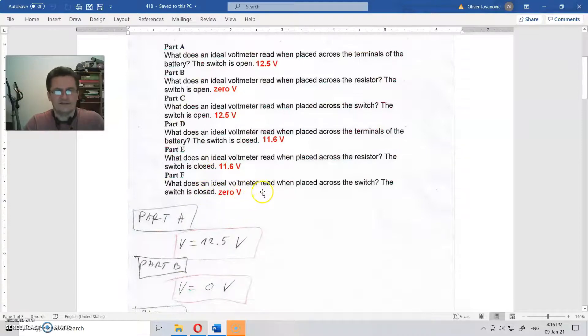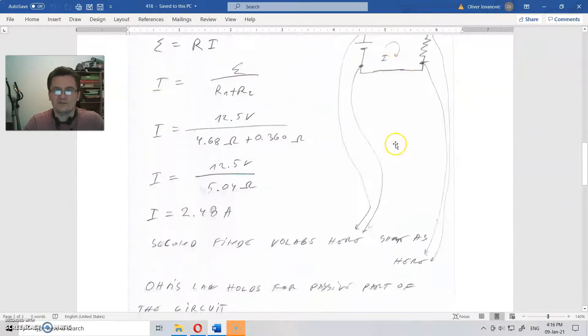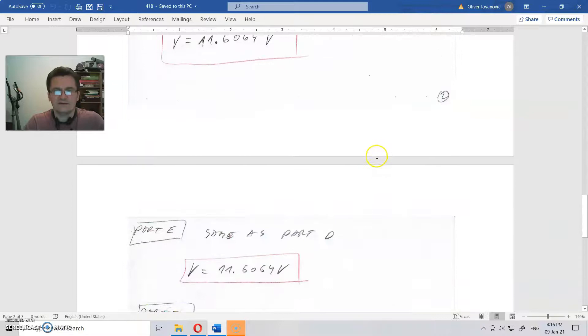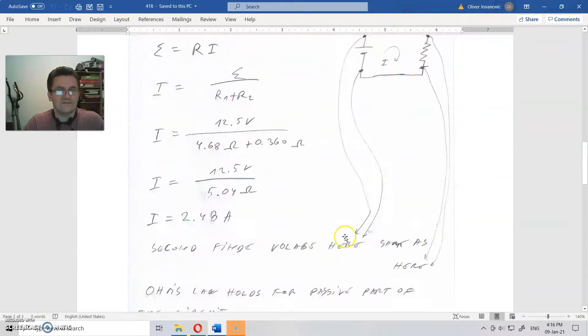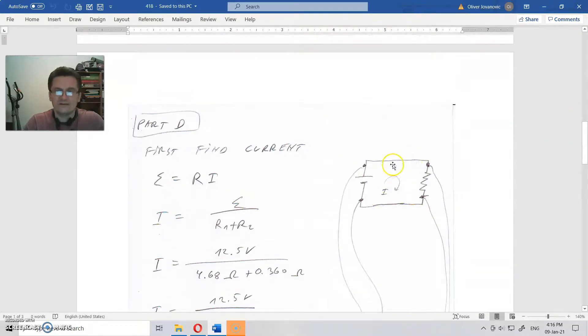Part F: What does an ideal voltmeter read when placed across the switch? The switch is closed. There is zero volts across the switch. Why is there zero volts? Well, a switch is a conductor. When you close a conductor and there is a current, there has to be, of course, a voltage difference there. But that voltage difference is very, very small for that current to move because there is almost no resistance in the wires.